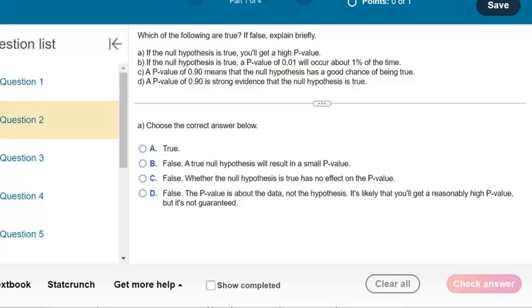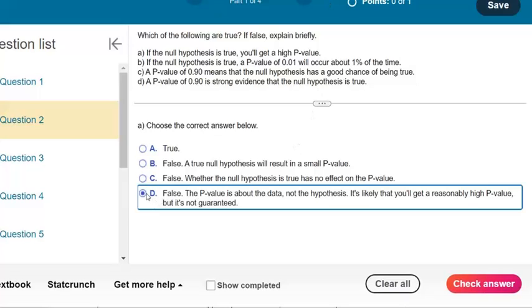So if the null hypothesis is true, then you're likely to get a high p-value. So A sounds like it would be marked true, but it's not guaranteed. So we want to mark true, we want to say D is right.